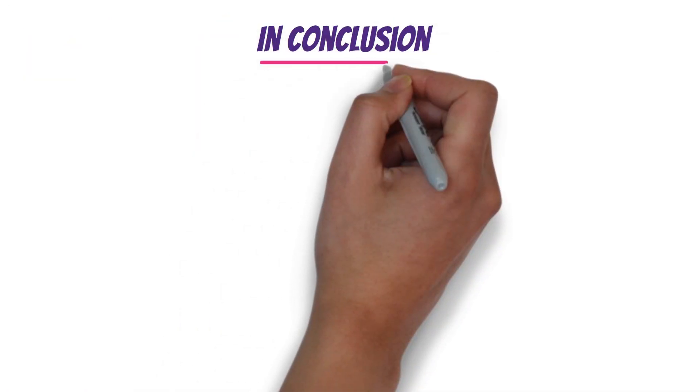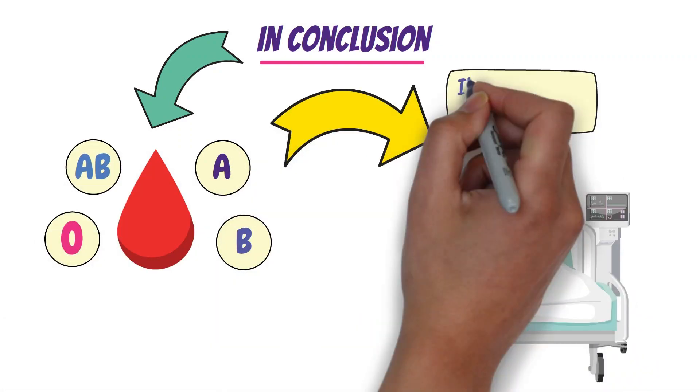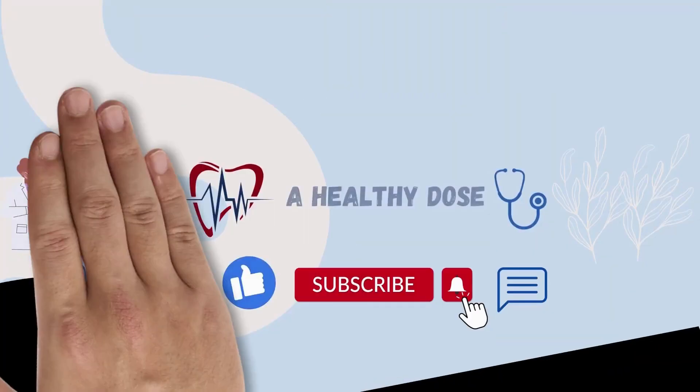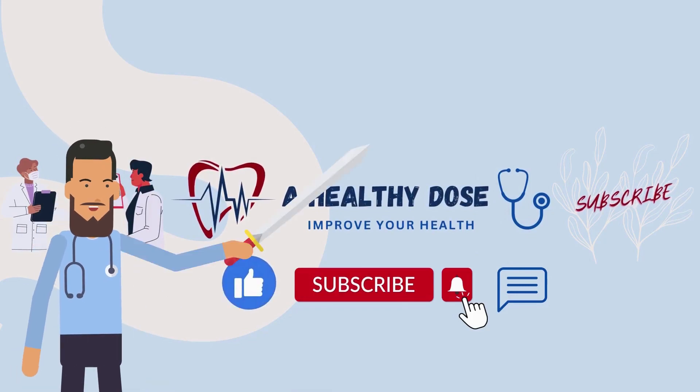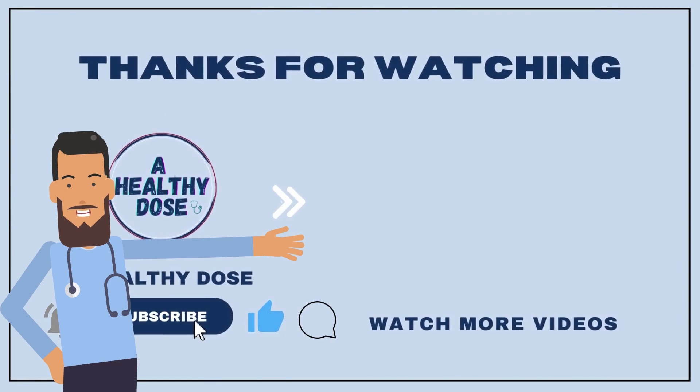So, in conclusion, blood type has been found to be associated with various health conditions. Thank you for watching. Please like, comment, and subscribe. Watch more videos by clicking on the video here.